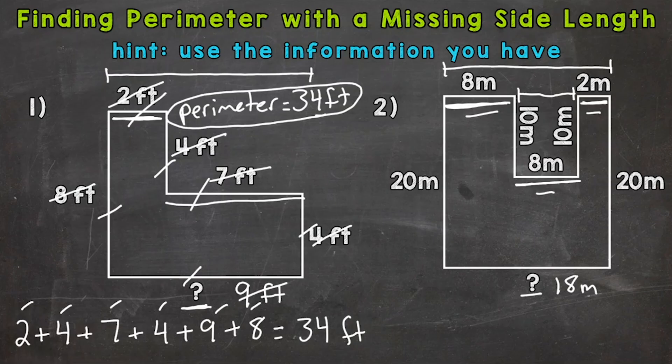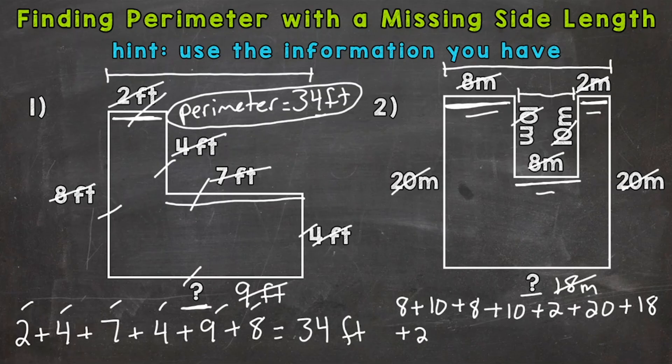Now we're good to go as far as adding up all of our sides in order to find perimeter. I'm going to start up top with the eight meters here and cross it off again. That way I don't count anything twice or skip anything. So eight plus 10 meters plus eight meters plus another 10 there plus two plus 20 plus 18. And I'm running out of room.